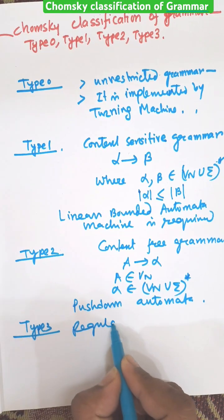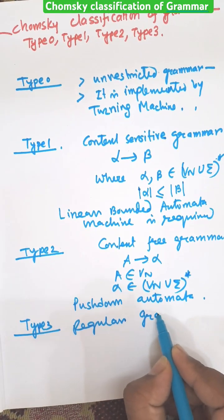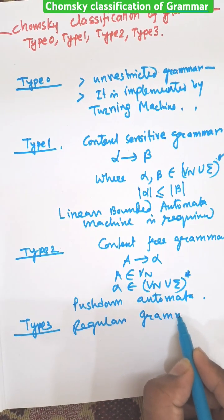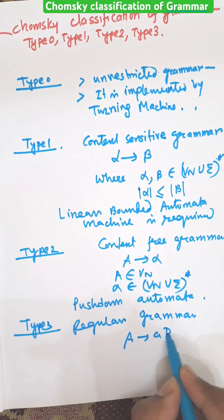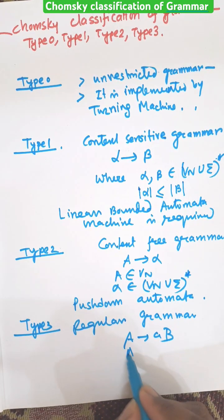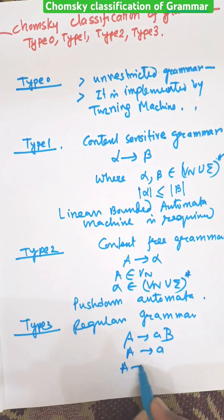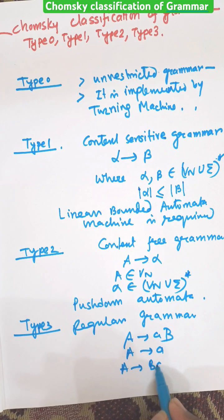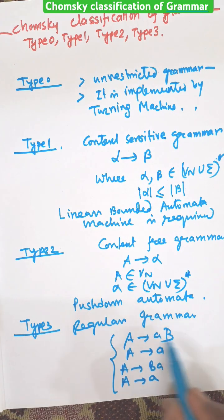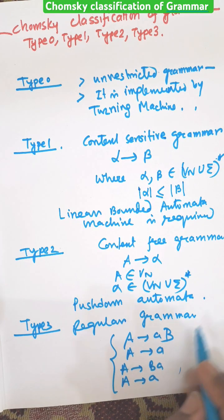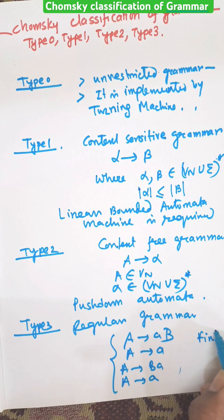Type 3 grammar is known as regular grammar. Productions take the form A → aB, A → a, or A → Ba, making them either right-linear or left-linear grammar. They are known as regular grammar and are implemented with the help of finite automata.